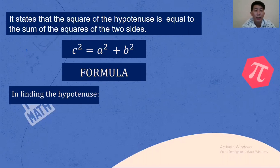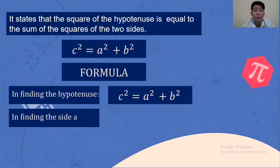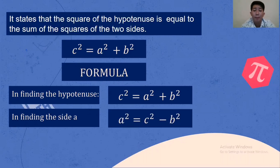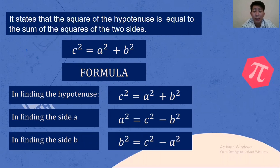In finding the hypotenuse, the formula will be: C squared is equal to A squared plus B squared. In finding side A, A squared is equal to C squared minus B squared. In finding side B, B squared is equal to C squared minus A squared.